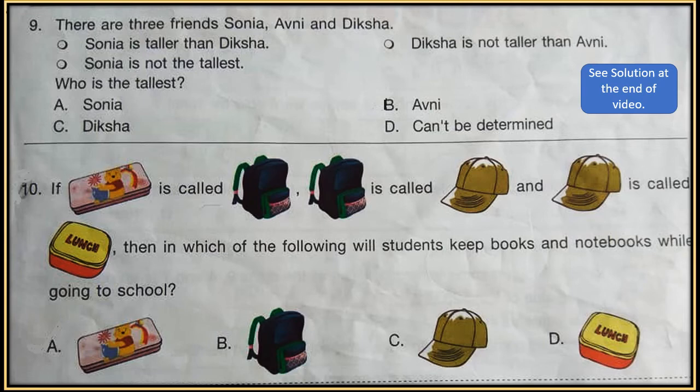Question 9: There are three friends: Sonia, Avni, and Diksha. Sonia is taller than Diksha. Diksha is not taller than Avni. Sonia is not the tallest. Now who is the tallest?